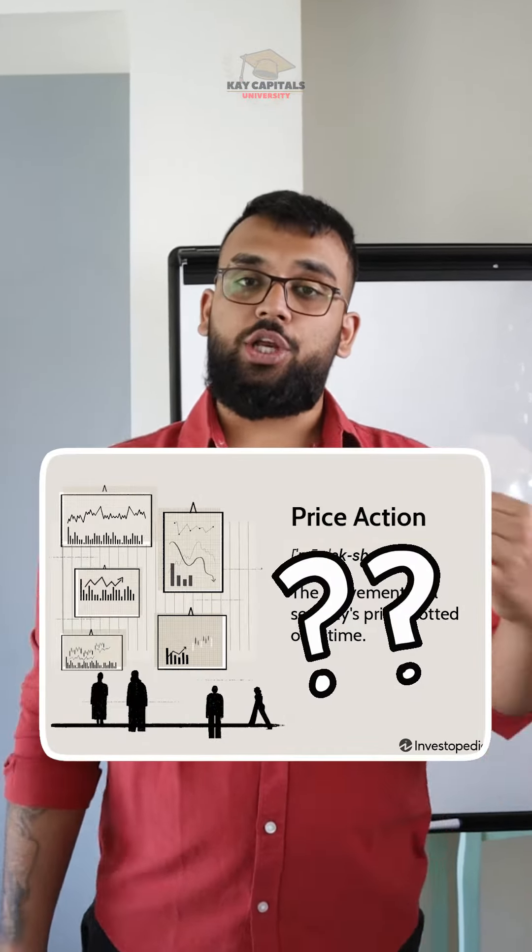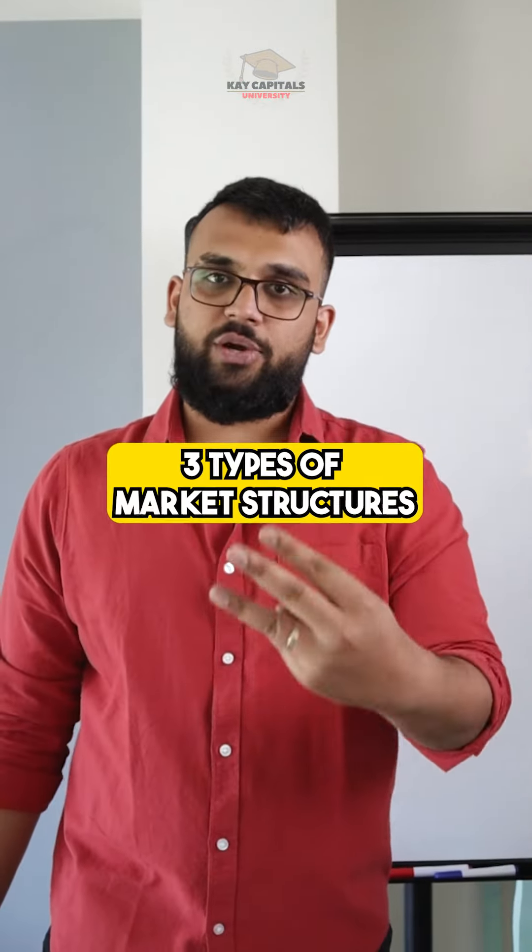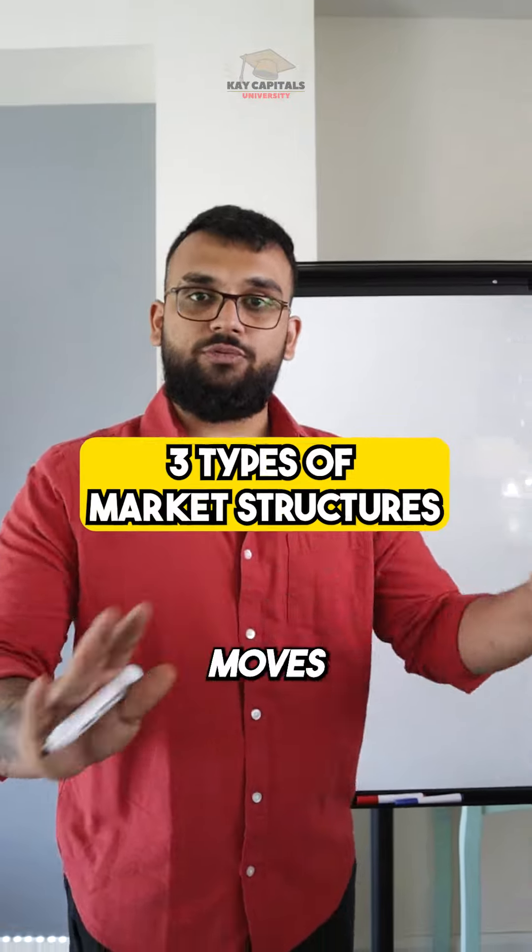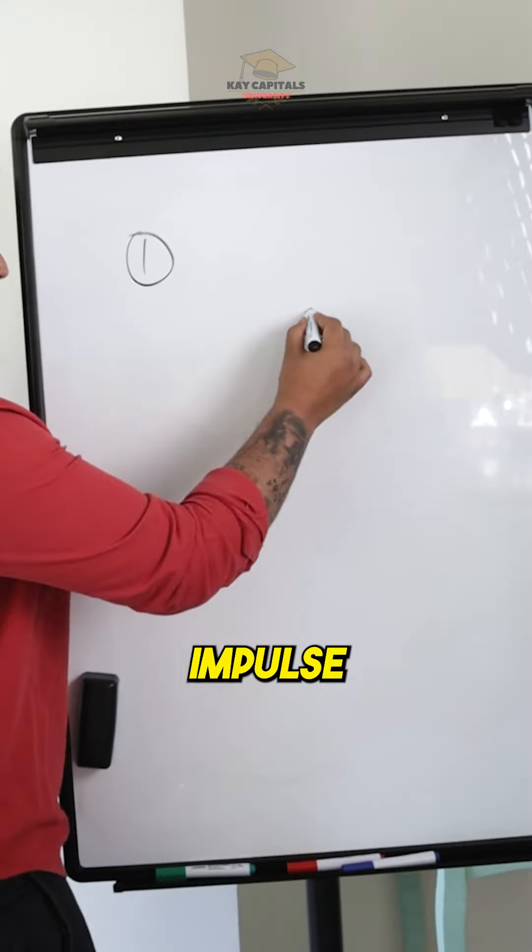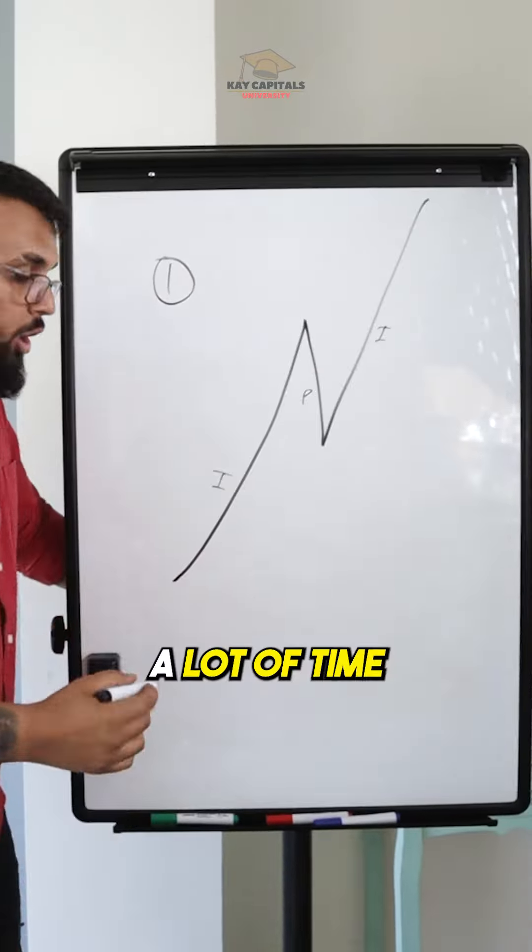If you're struggling with understanding price action, you need to watch this. There are three types of market structures and everything in the stock market moves accordingly. The first one is impulse, pullback, impulse. A lot of times you'll see a pullback happen to a critical level.